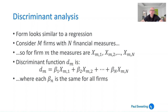The form of discriminant analysis looks quite similar to a regression. Say you've got N firms and N financial measures. For firm little n, the various measures you've got are x_m1, x_m2, down to x_mn, and the discriminant function D_m is described as beta_1 * x_m1 + beta_2 * x_m2, all the way up to beta_n * x_mn, where beta_n is a parameter which is the same for all firms. You tweak it to try to get particular characteristics of this discriminant function.